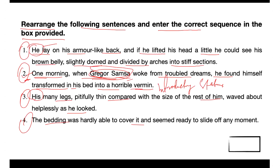In that case, sentence one logically follows sentence two, as it describes Gregor's initial reaction upon waking in his transformed state. It provides details about his physical state and surroundings — like the brown belly, slightly domed and divided by arcs into steep sections — giving the reader a vivid image of his new form.